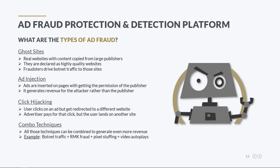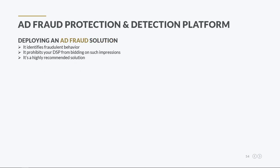It goes without saying that all the above ad fraud techniques can be combined to generate even more revenue — for example, botnet traffic with remarketing fraud, pixel stuffing, and video autoplays. As you have realized, it would have been extremely difficult for advertisers to combat all those ad fraud types on their own. Remember, fraudsters already use sophisticated technology which is continuously being improved. On the bright side, there are some ad fraud detection and protection tools which can identify fraudulent behavior and prohibit a DSP from bidding on such impressions. If you plan to run programmatic advertising campaigns, I highly advise you to deploy this solution. Otherwise, expect most of your marketing money to be stolen by ad fraudsters.